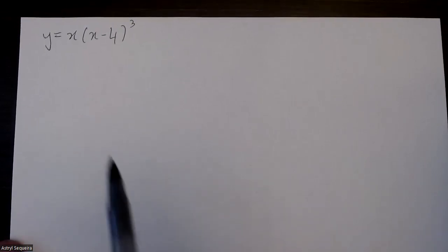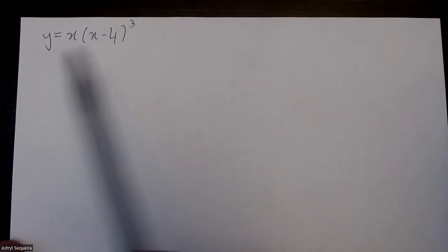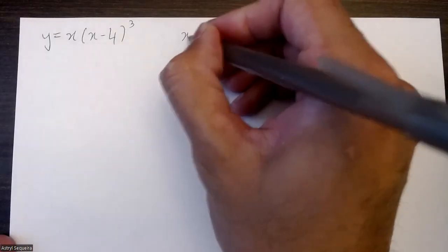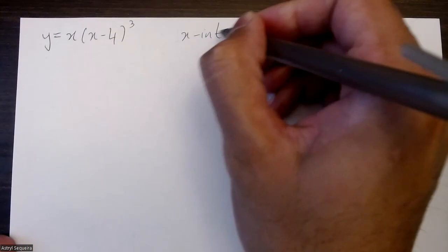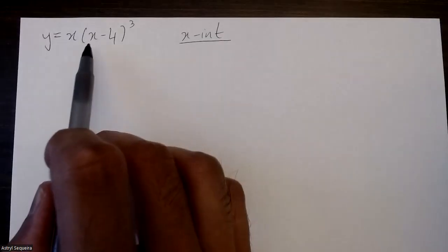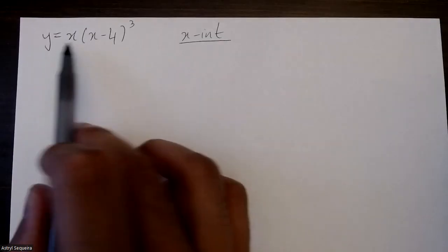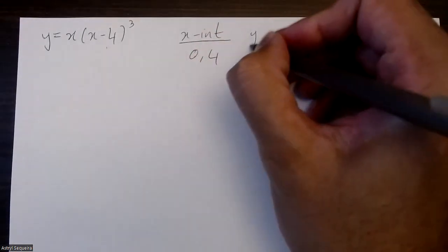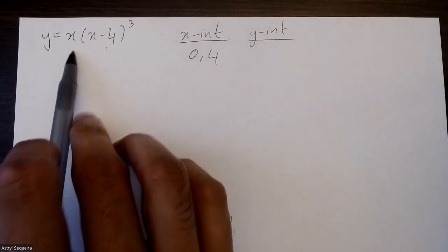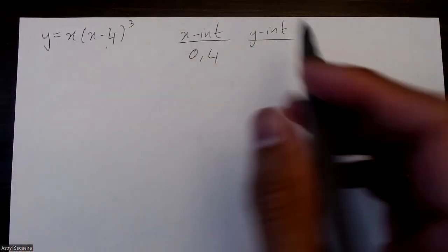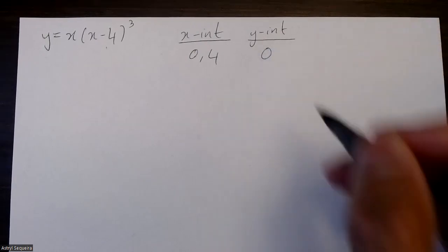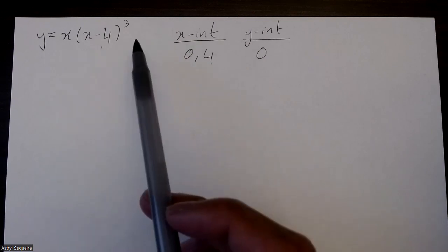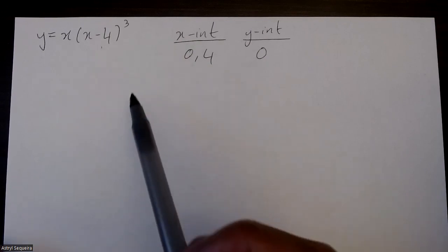I want to do the full curve sketching algorithm for this polynomial equation. I'll start with finding my x and y-intercepts. For my x-intercepts, this is in factored form, so I can already tell that my x-intercepts are going to be 0 and positive 4. For my y-intercept, I'll sub in x as 0: 0 times negative 4 cubed is just 0, so my y-intercept is 0 as well. There are no asymptotes for this function because it's a regular polynomial function.